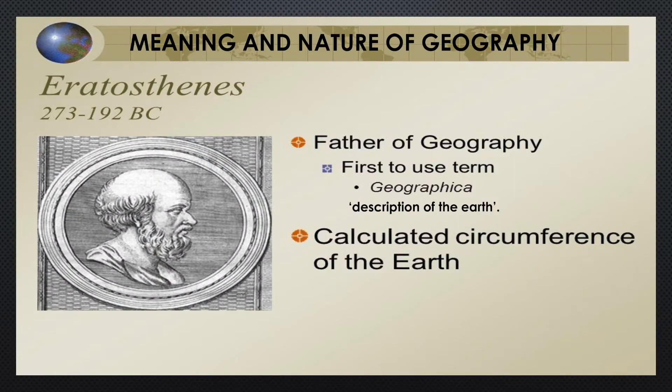Let us see the meaning of geography. Geography is the oldest of all the sciences. The ancient Greek scholar Eratosthenes is known as the father of geography, since he is the person who first coined the term geography to mean the description of earth. Etymologically, the word has been derived from two Greek words: geo and graphos. Geo means earth, graphos means description. He also calculated the circumference of the earth.